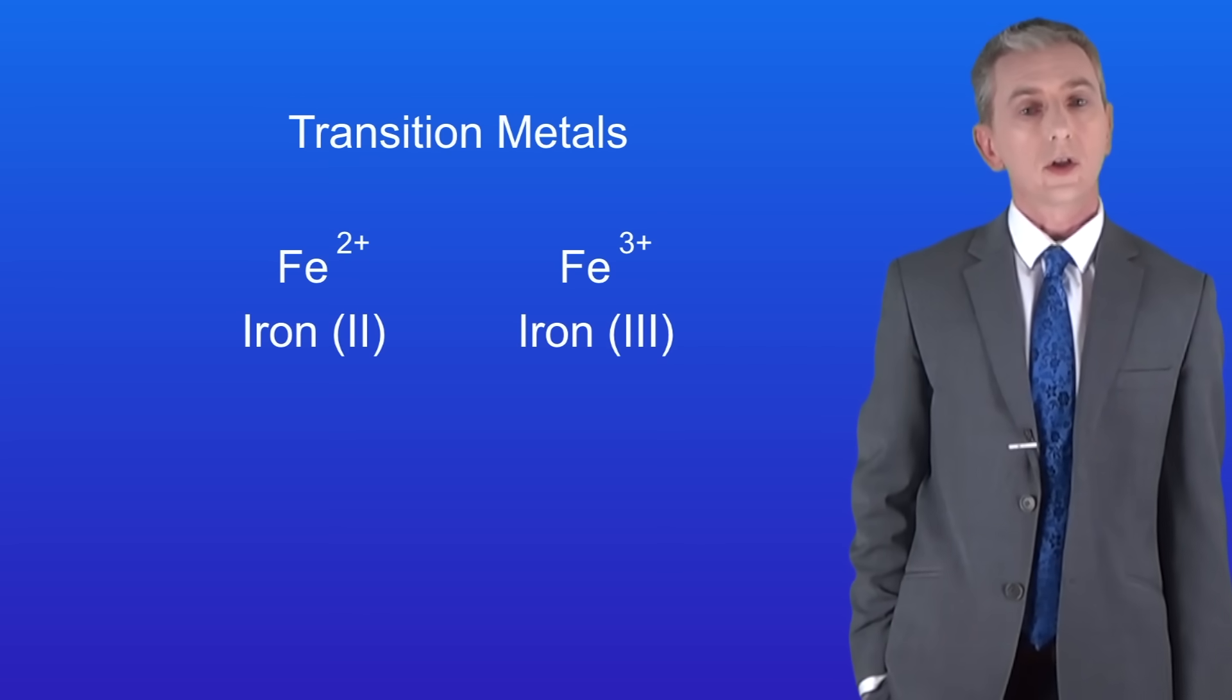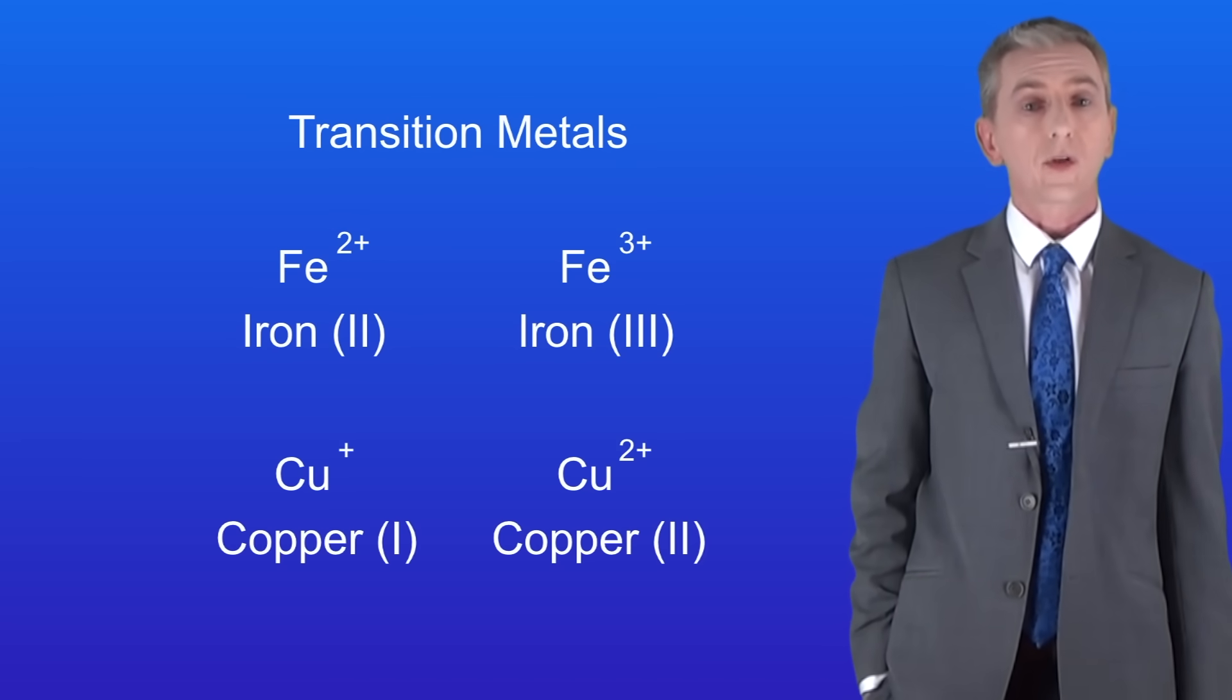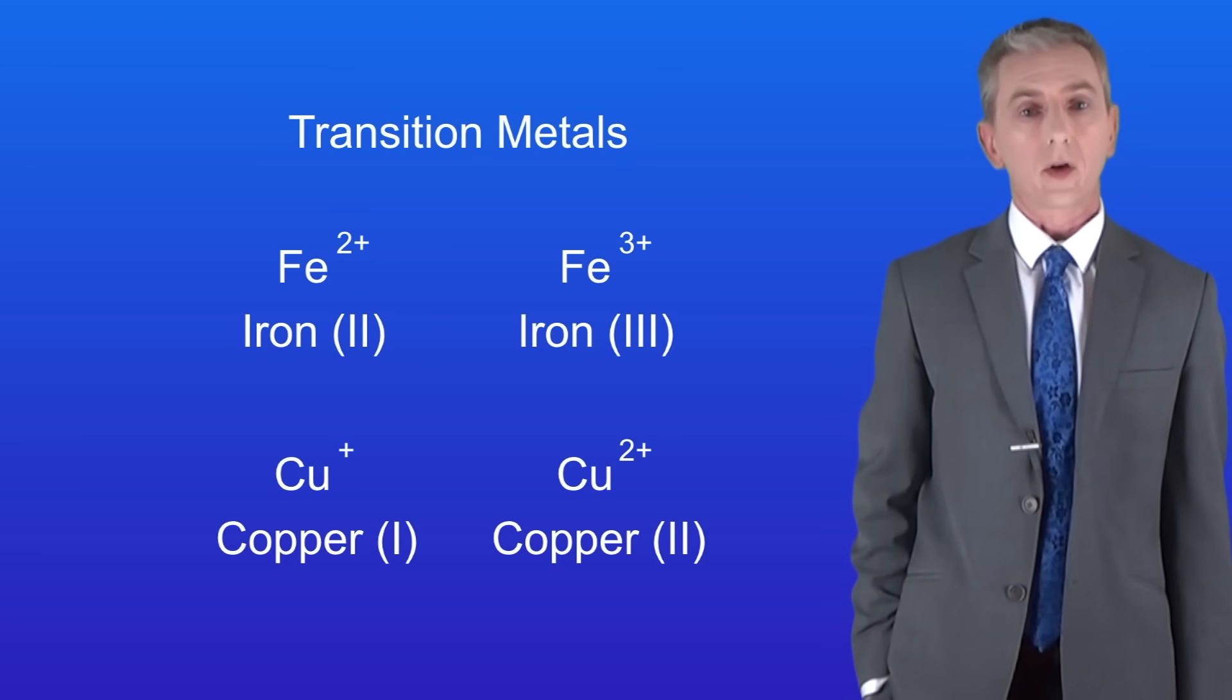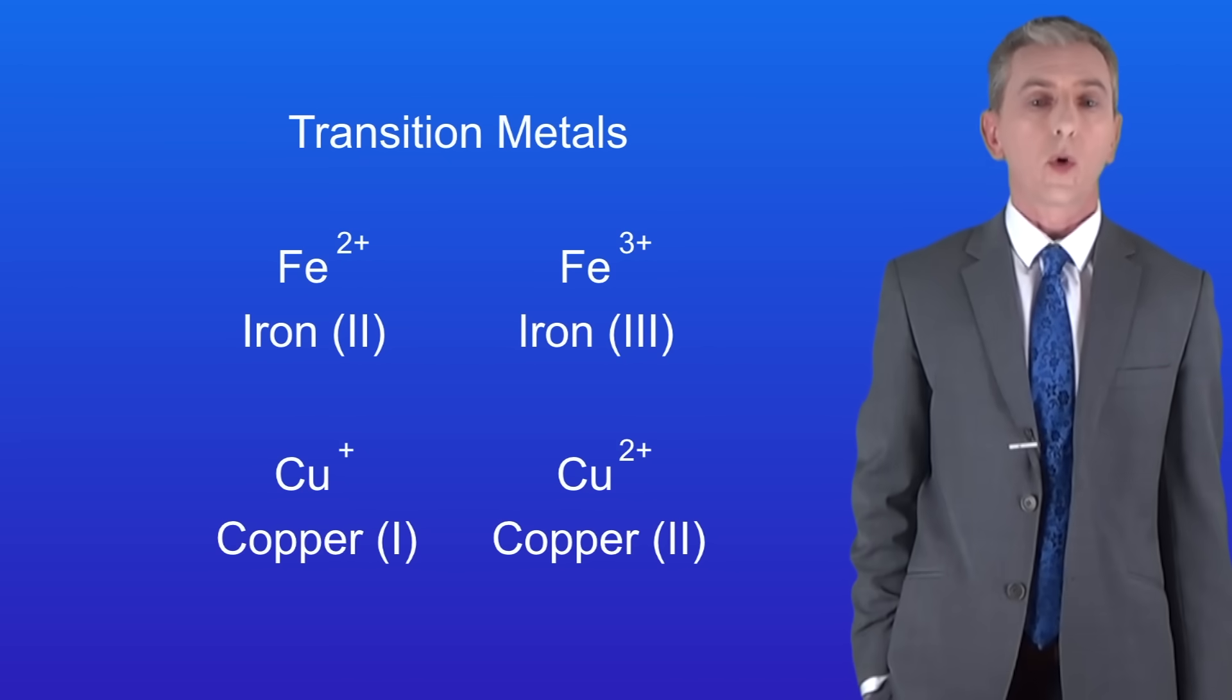Scientists call these iron 2 and iron 3 and you'll sometimes see these in compounds. Another good example is copper which can form a 1+ ion and a 2+ ion, and again we call these copper 1 and copper 2.